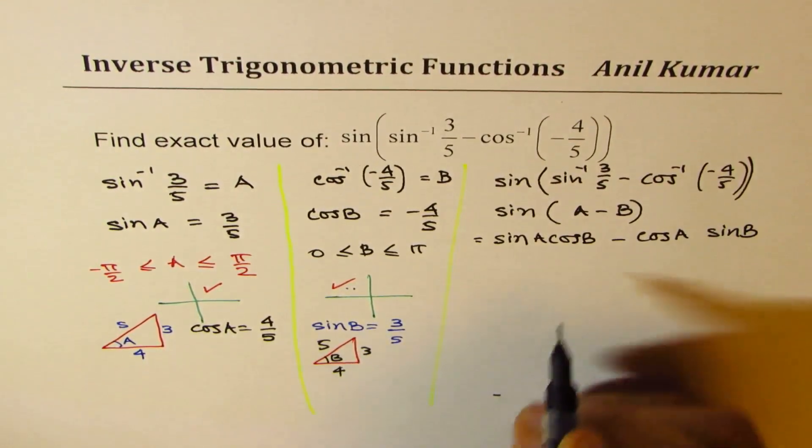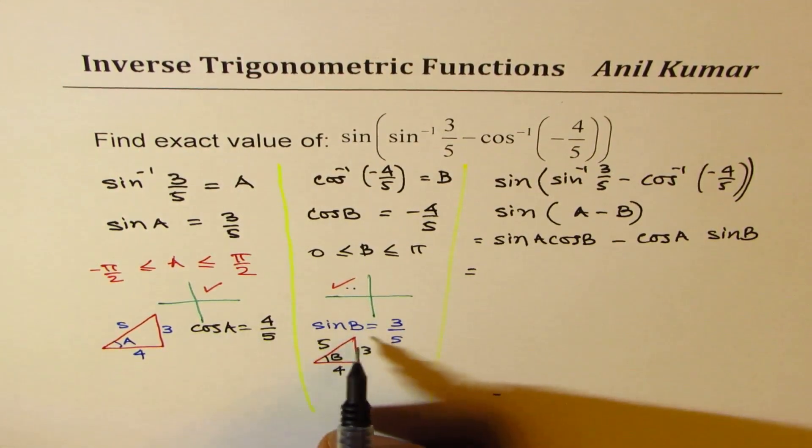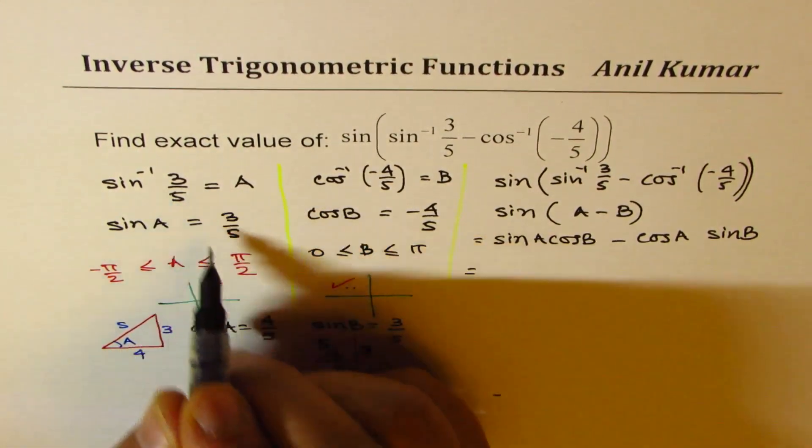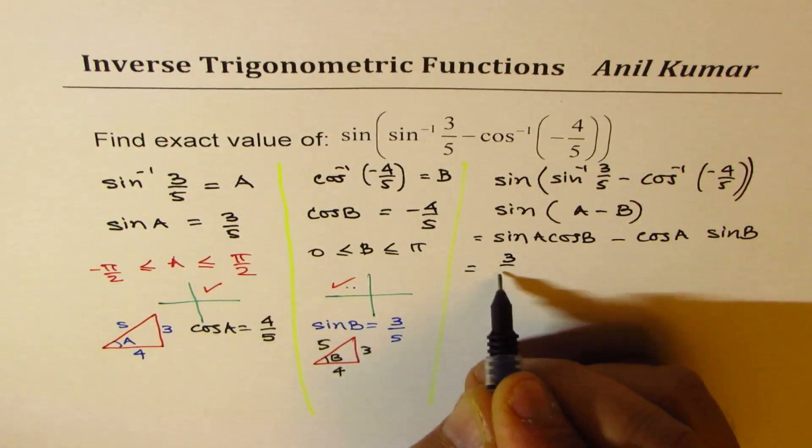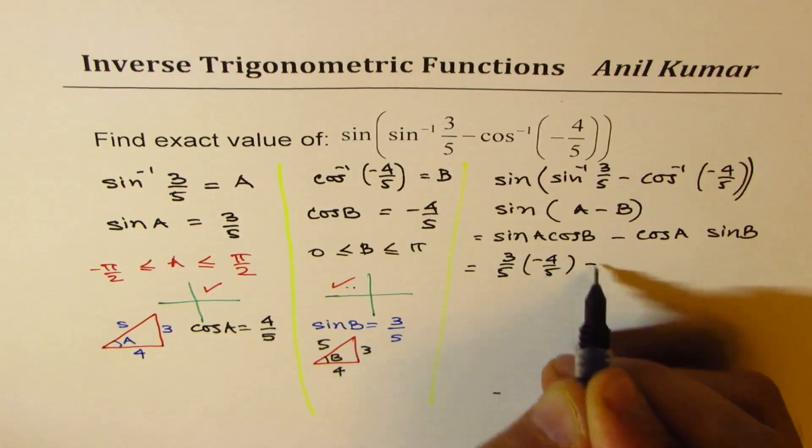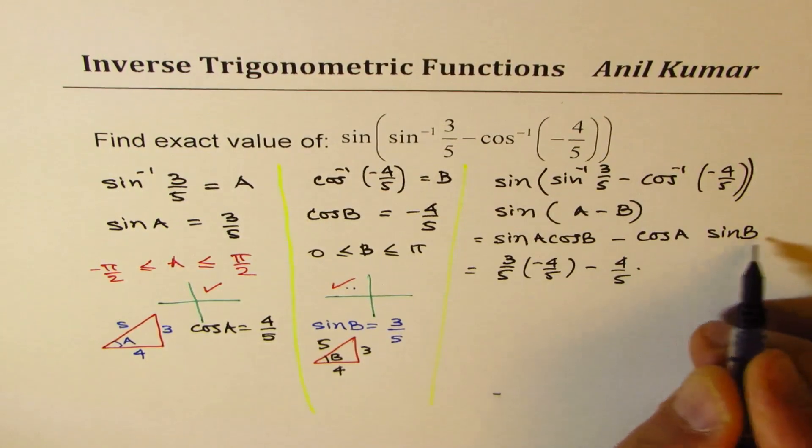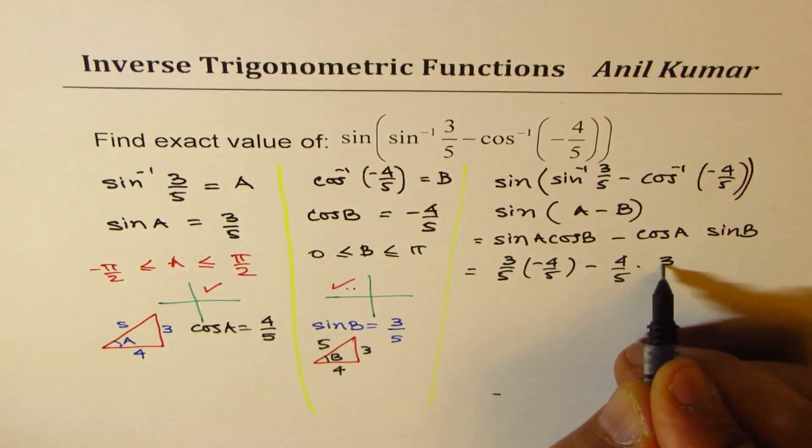Let's substitute the values. Sine A is 3 over 5. Cos B is minus 4 over 5. Cos A is 4 over 5. And sine B is 3 over 5.